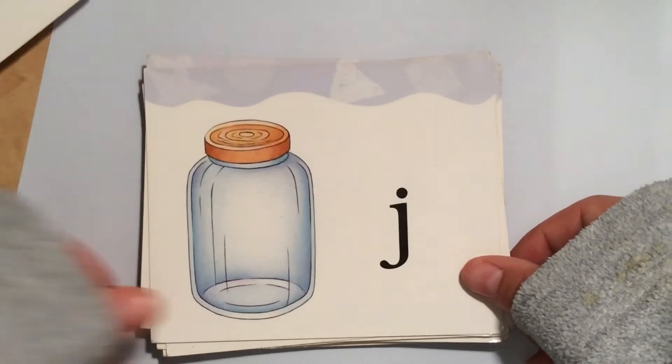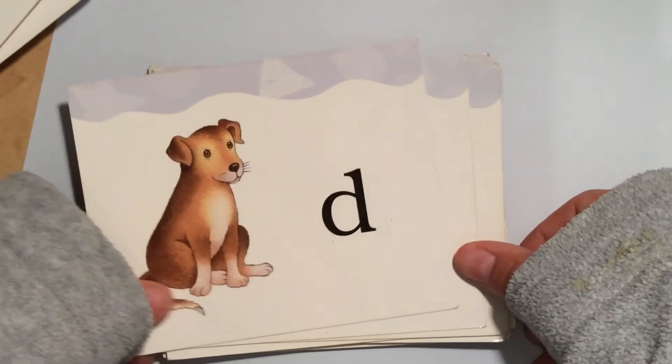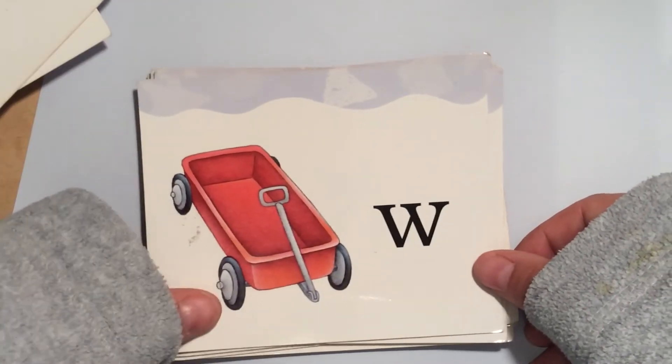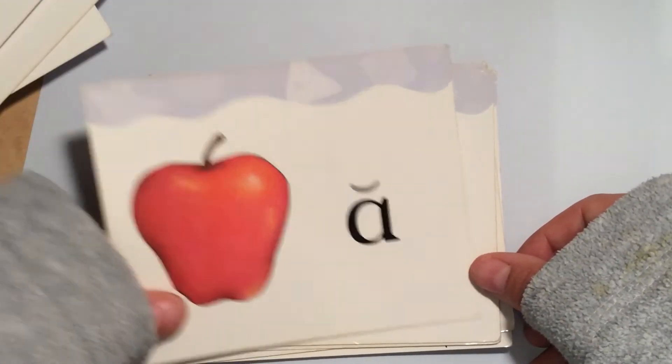Tooth U, Jar J, Equal E, Dog D, Icicle I, Hat H, Wagon W, Shark SH, Apple A.